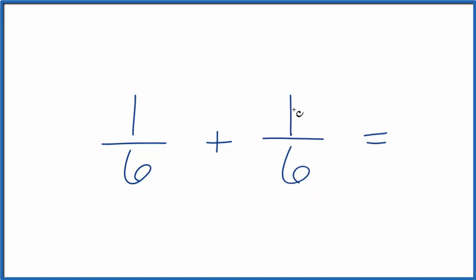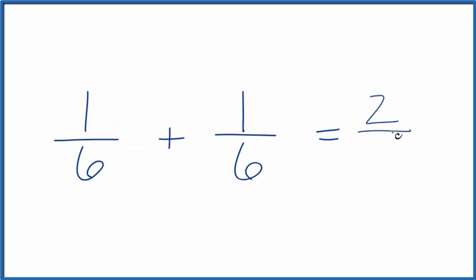We add the numerators together, one plus one, that gives us two. And then we just put the denominator across the bottom. We keep it at six.